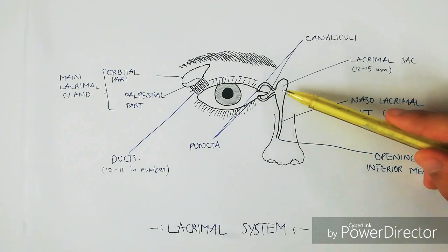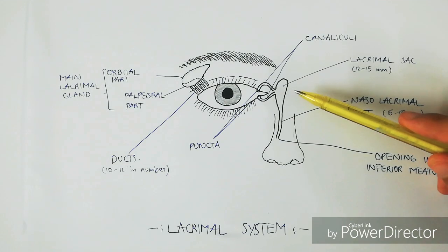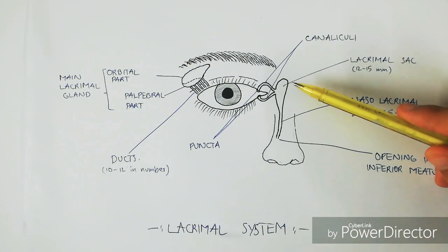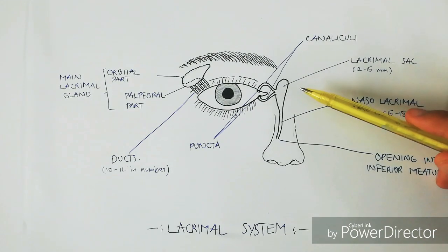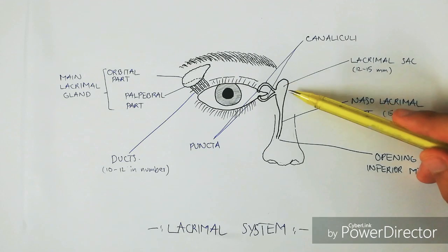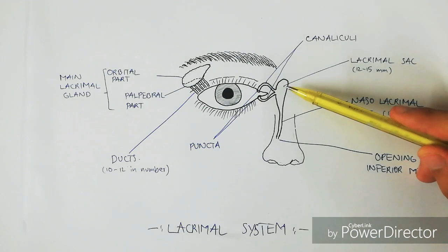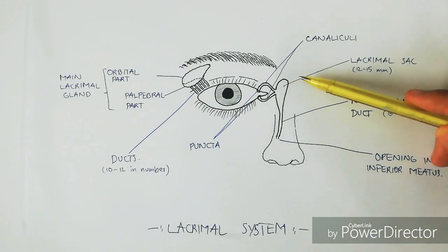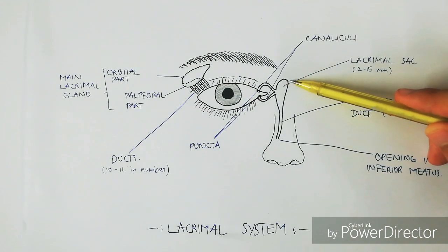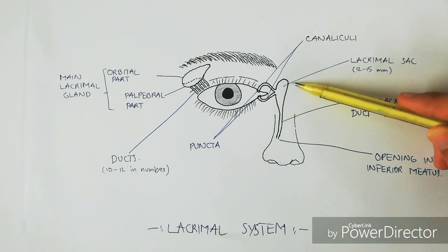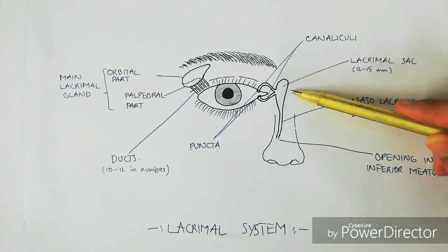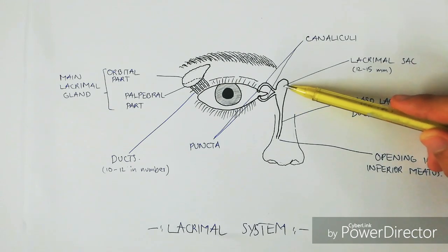This bony fossa is formed by the lacrimal bone and the frontal process of the maxilla. The lacrimal sac is about 12 to 15 millimeters in length and 5 to 6 millimeters in breadth.